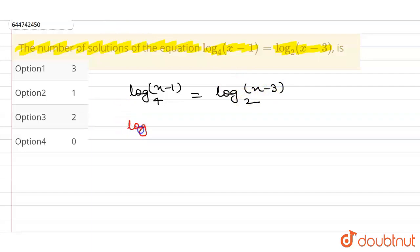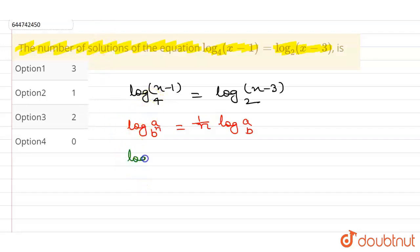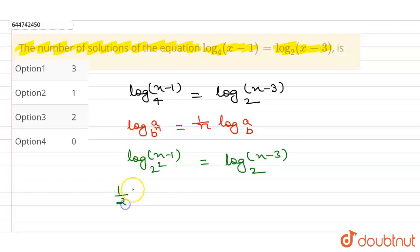If we have log of a to the base b to the power n, then we can write it as (1/n) log a to the base b. Using this property, we can rewrite the equation as log (x minus 1) to the base 2 squared equals log (x minus 3) to the base 2, which gives us (1/2) log (x minus 1) to the base 2 equals log (x minus 3) to the base 2.